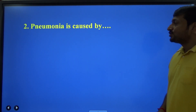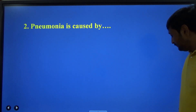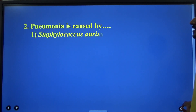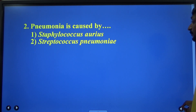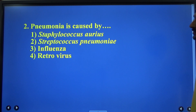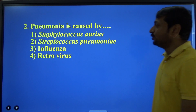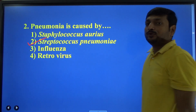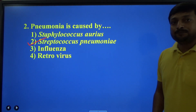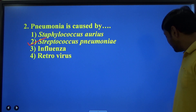Next question: pneumonia is caused by — Staphylococcus aureus, Streptococcus pneumoniae, Influenza virus, or Retrovirus? Of course, pneumonia is caused by the smooth strain of Streptococcus pneumoniae, as we have learnt.